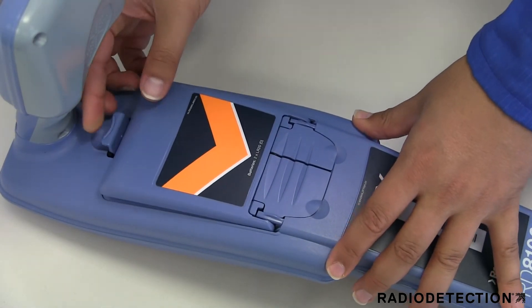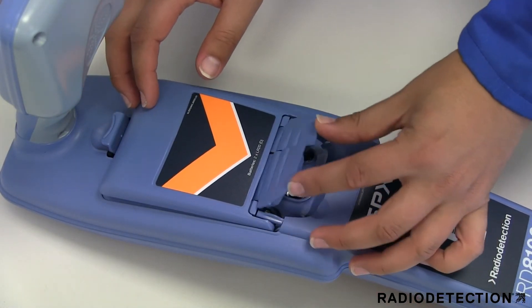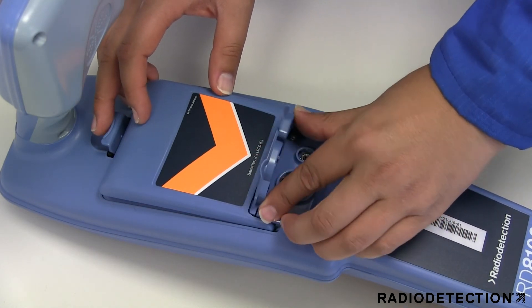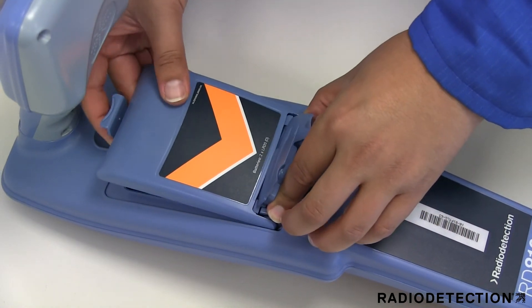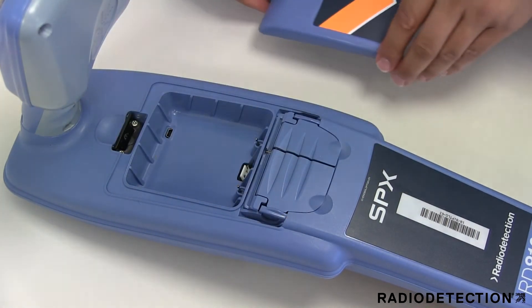If you have a lithium-ion rechargeable battery pack for your locator, this is attached by removing the alkaline tray and replacing it with the rechargeable pack. Open the battery compartment using the release catch.